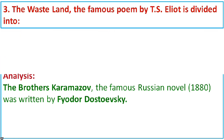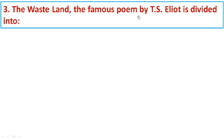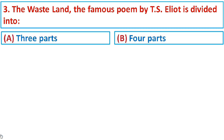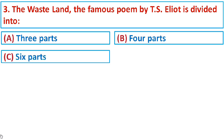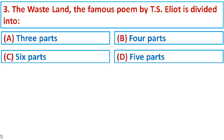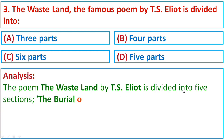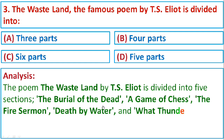Question number three: The Waste Land, the famous poem by T.S. Eliot, is divided into Option A: three parts, Option B: four parts, Option C: six parts, or Option D: five parts. The Waste Land by T.S. Eliot is divided into five sections: The Burial of the Dead, A Game of Chess, The Fire Sermon, Death by Water, and What the Thunder Said. The correct option is D: five parts.